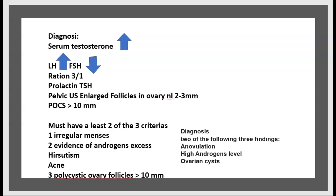Diagnosis involves serum testosterone, which is elevated. There is an increased LH to FSH ratio of 3 to 1. Prolactin and TSH are also checked. Pelvic ultrasound shows large follicles in the ovary — normal follicles are 2 to 3 millimeters, while in PCOS they are over 10 millimeters.